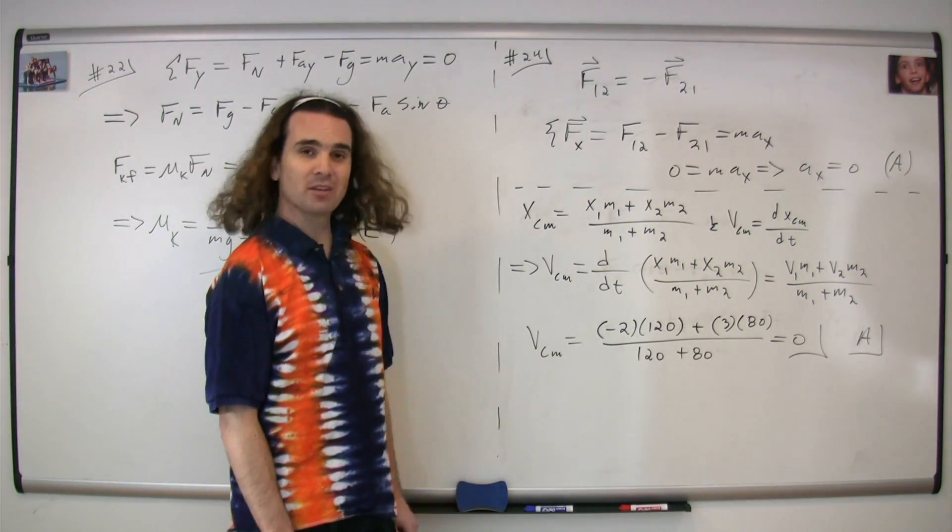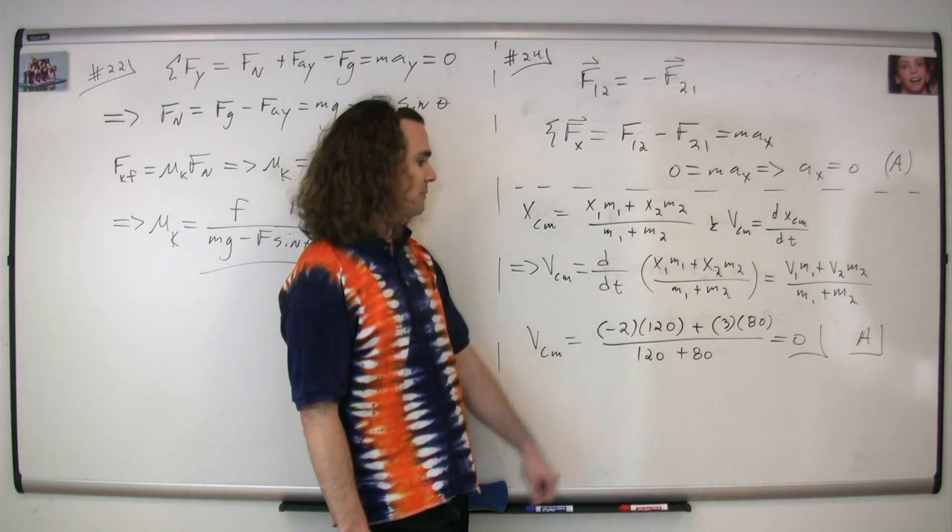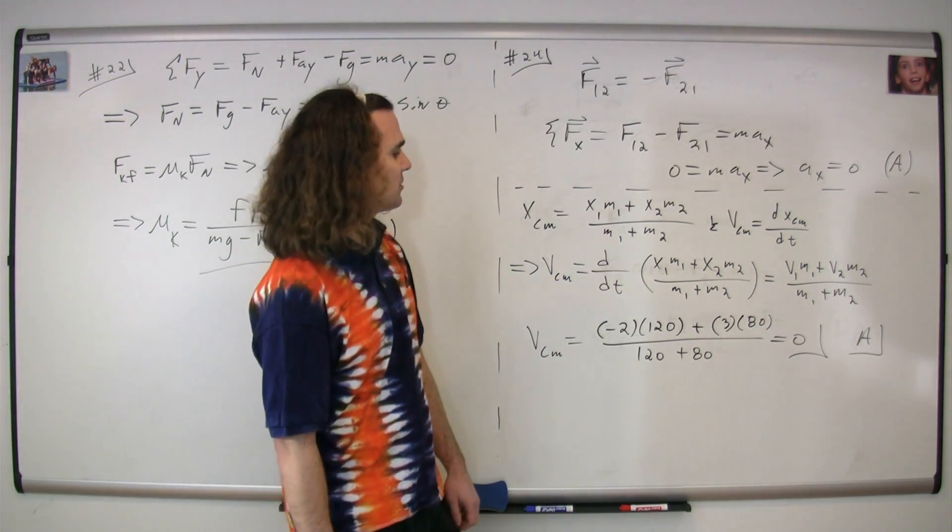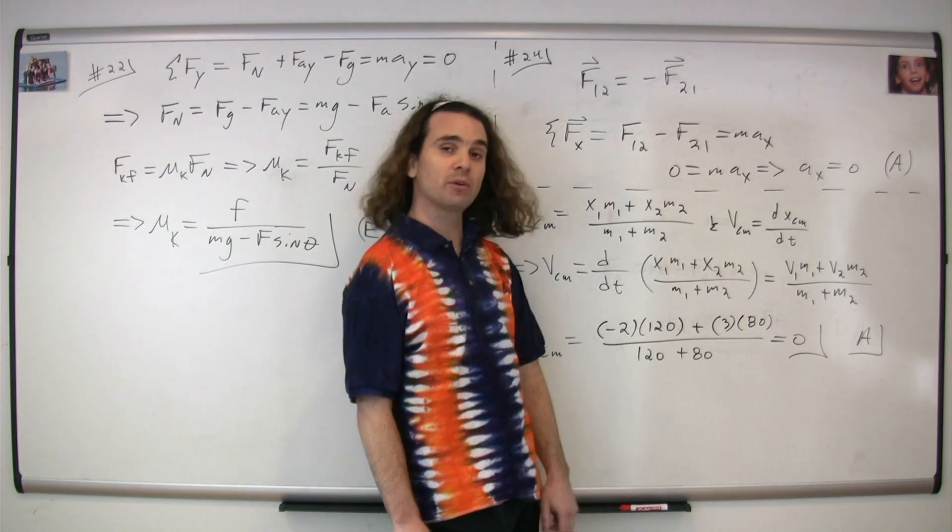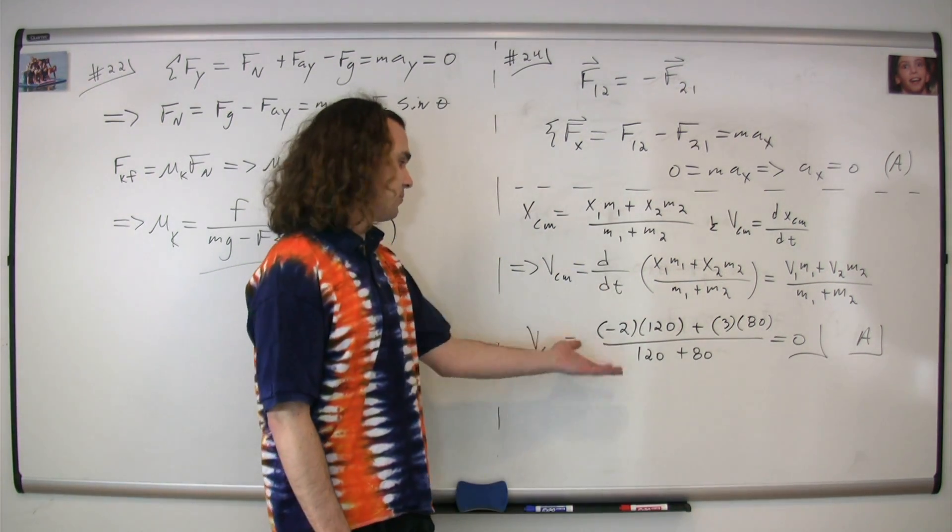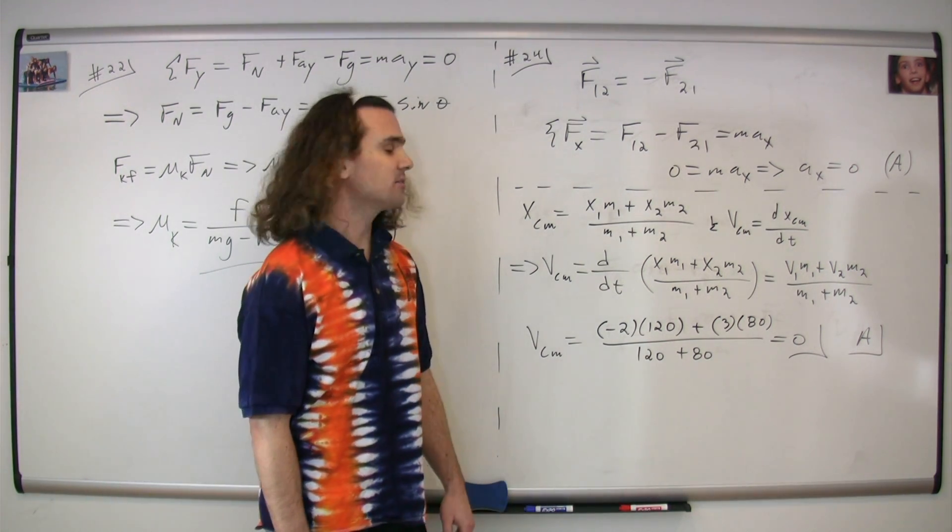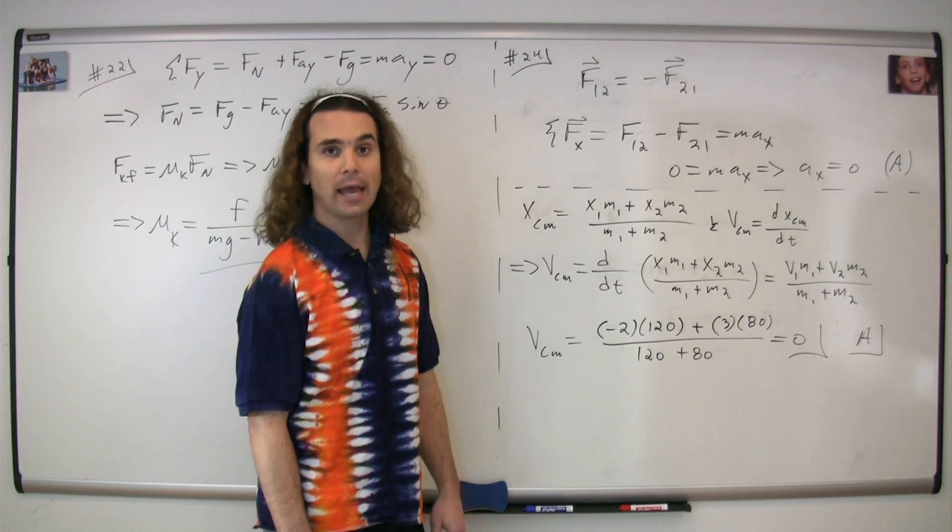Substituting in our numbers, person one is moving to the left at a speed of two meters per second, so they have a velocity of negative two, times their mass of 120, plus the speed of the second person, which was three meters per second to the right, or positive three, times their mass, which is 80, and we end up with 120 plus 80 on the bottom, and it works out to be zero again. The velocity of the center of mass is zero, the correct answer is A.